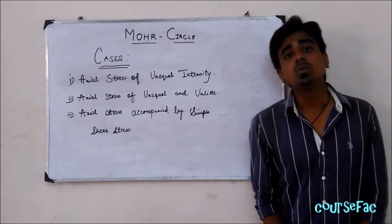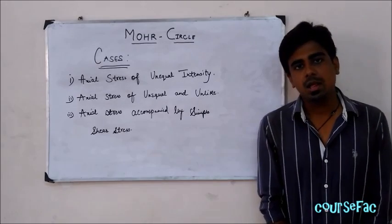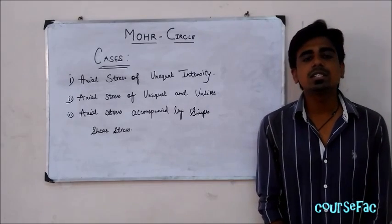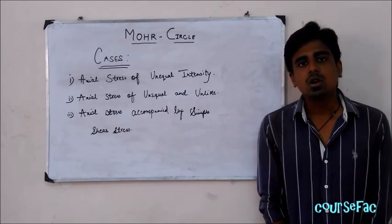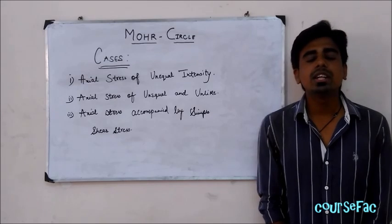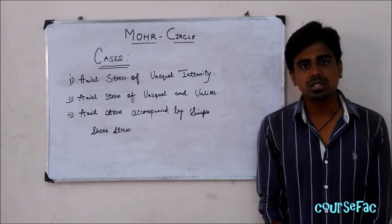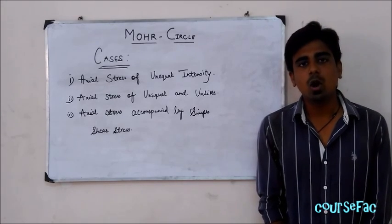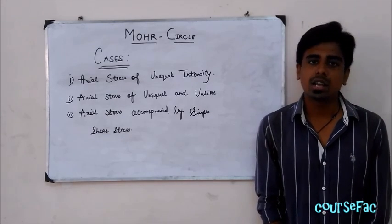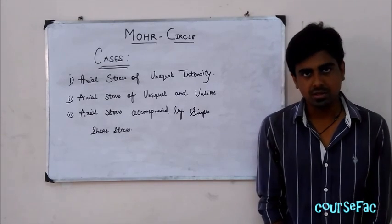What is Mohr Circle? Mohr Circle is a graphical representation of the various types of stresses that act on any oblique or inclined planes.